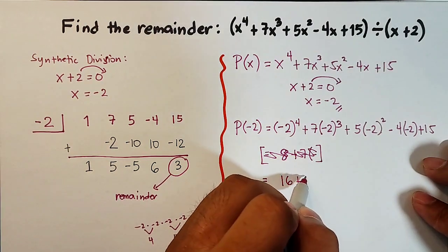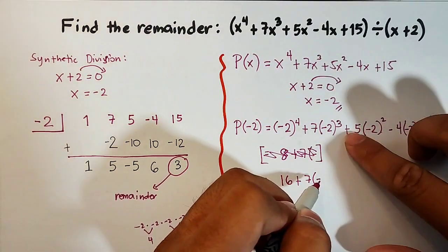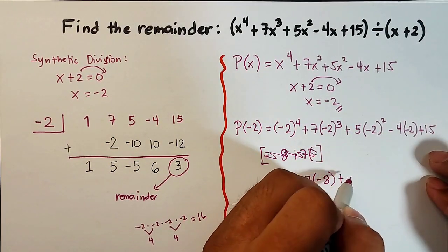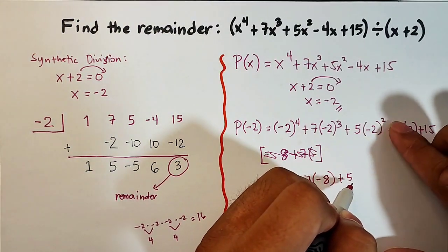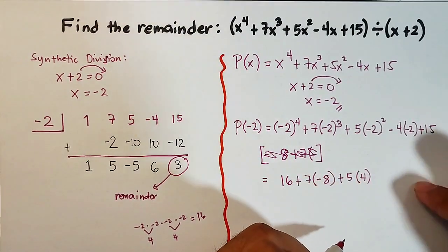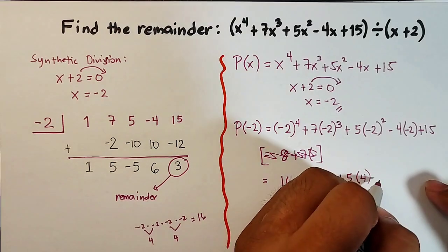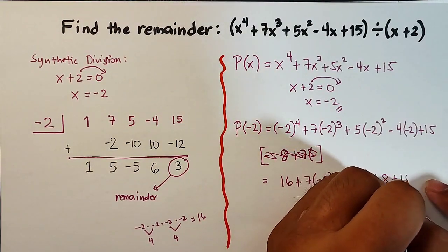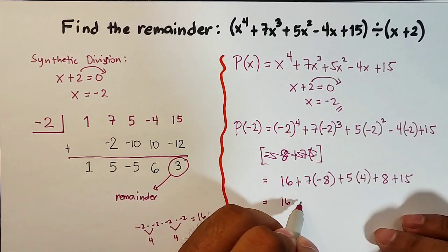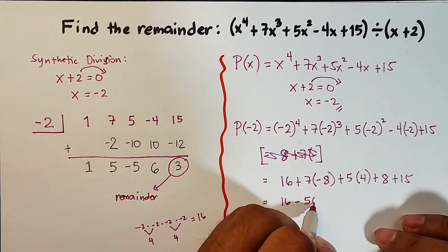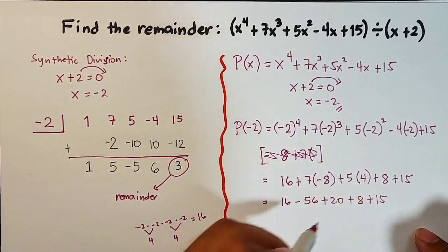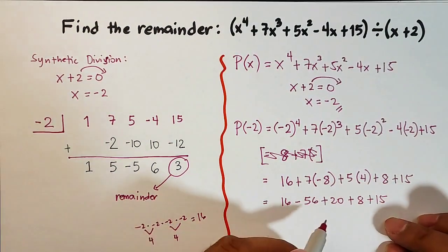Next, plus 7 times negative 2 cubed: since the exponent is odd, the result is negative, so 2 cubed is 8, giving negative 8. Then plus 5 times negative 2 squared: the exponent is even so the result is positive, and 2 squared is 4, giving positive 4. Then negative 4 times negative 2 is positive 8. Plus 15. So we now need to add all of these together.